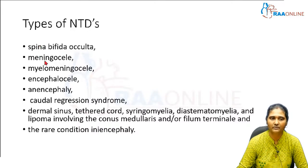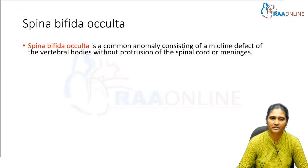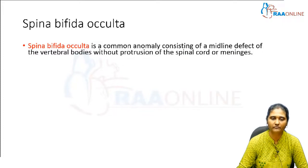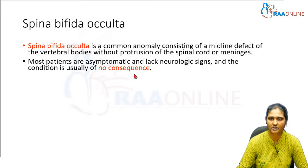We will now see each one in detail. The first is spina bifida occulta. As the name indicates, it is a common anomaly consisting of a midline defect of the vertebral body without protrusion of the spinal cord or meninges. Most patients are asymptomatic and lack neurological signs, and spina bifida occulta usually has no consequences.